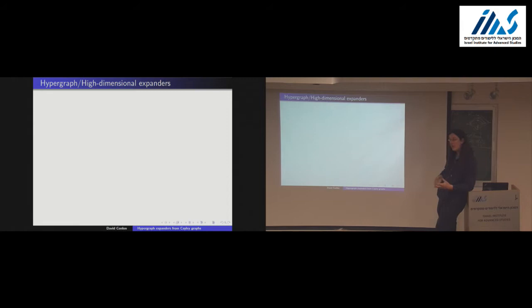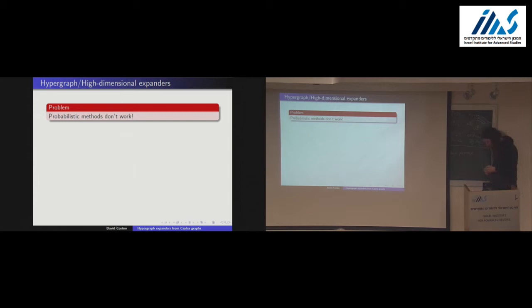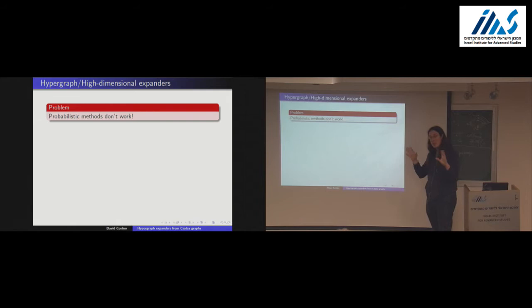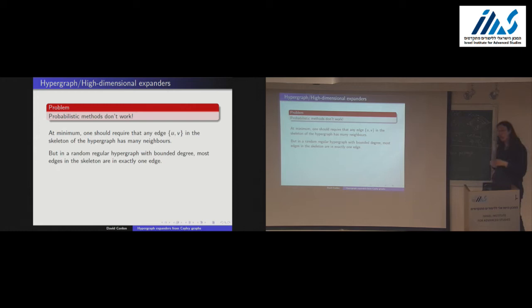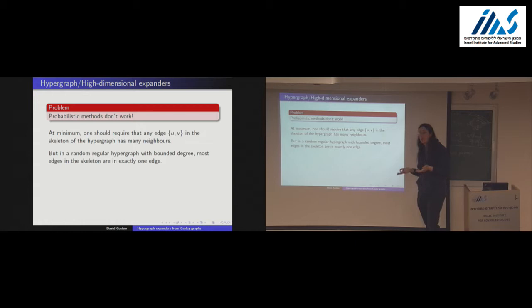What I actually wanted to talk about is the high-dimensional case — hypergraph generalizations of expanders. The first thing you note is that probabilistic methods don't work. What do we mean by hypergraph expander? In the three-uniform case (edges of size three), we'd like the property that if you take a bunch of pairs contained in at least one edge, there should be many triples containing those pairs — so any particular pair contained in at least one triple should be contained in many triples.